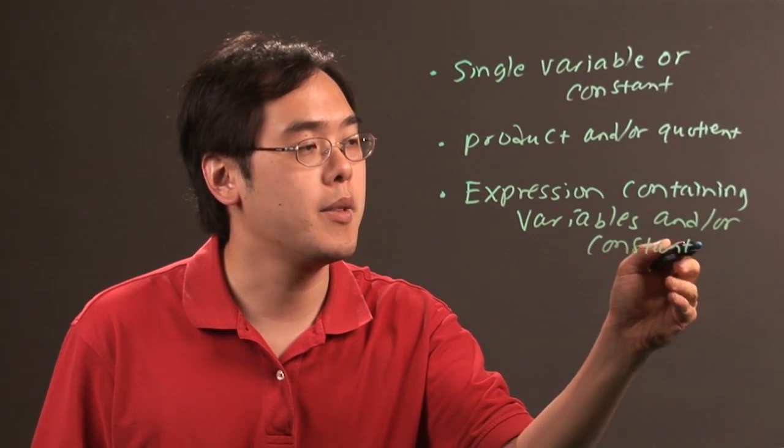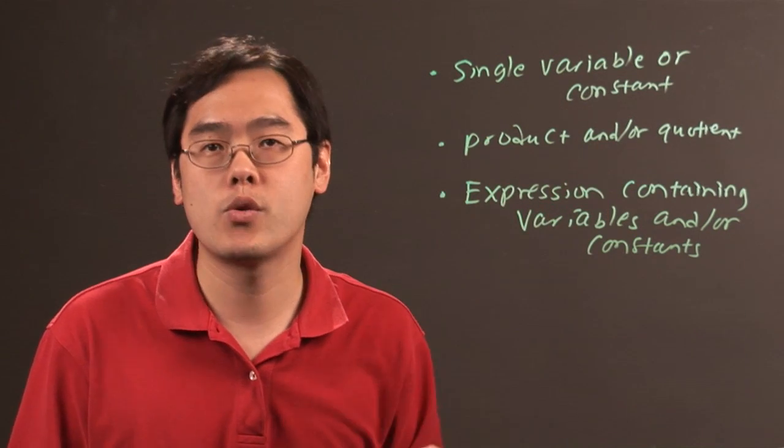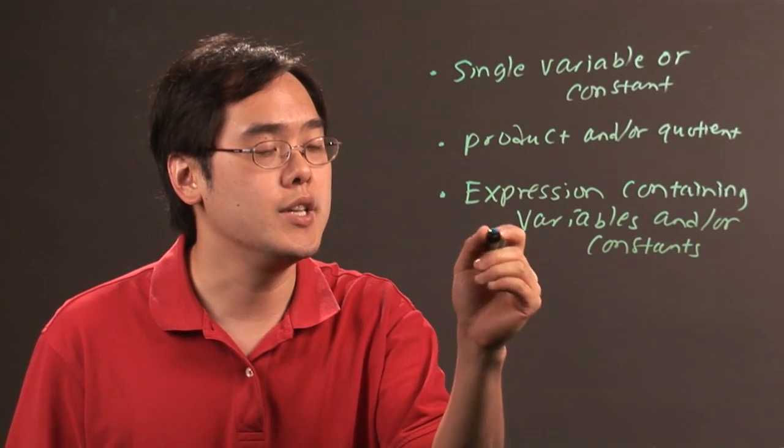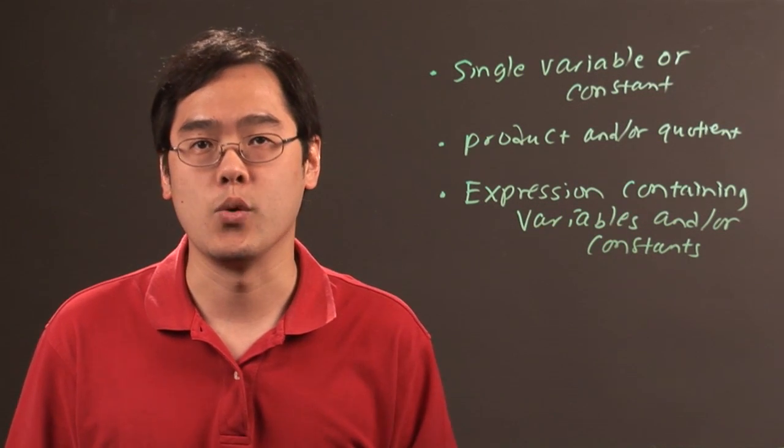So just to kind of recap a little bit, you need at least one single variable or constant, you need a product and or quotient of the variables and or constants, and you need a product or quotient of expressions containing the variables and or constants.